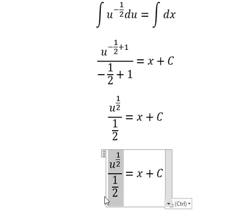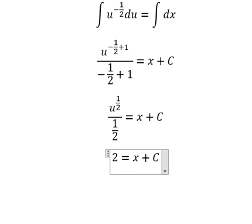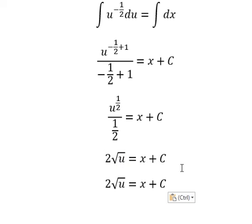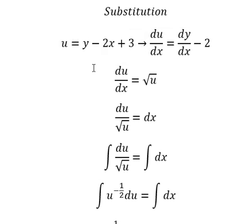So we simplify and you get 2 multiplied by the square root of u. And u is this one.